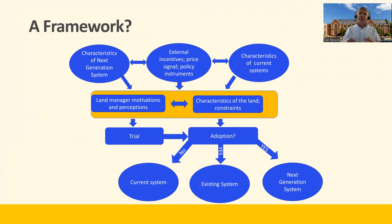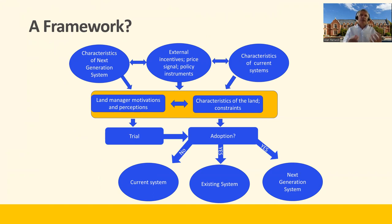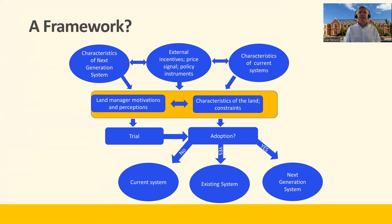We developed a framework for thinking about this. One of the key issues is this idea of land manager motivations and perceptions — there's all this information coming to farmers about change and the need for change, and there are these new systems available compared to their old systems. It's really about land manager motivations and perceptions related to the characteristics of their land — what can their land actually do? Farmers may trial new systems or adopt them or not, and the interaction of all these factors will determine it. In our analysis, we're really interested in this land manager motivation and perception part of the framework.